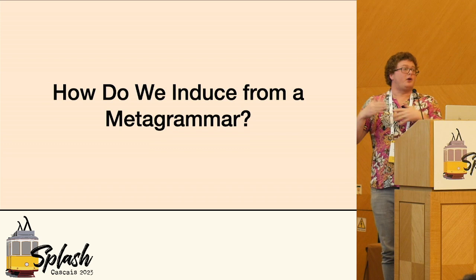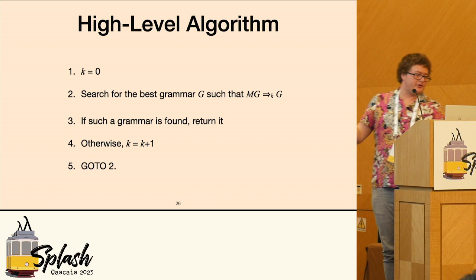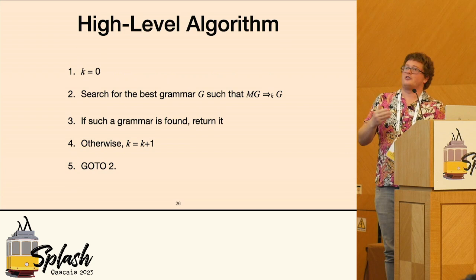Now we want to do the other side — we want to do grammar induction. So how do we induce from a metagrammer? We have complexity zero. We search for the best grammar G such that the metagrammer steps with complexity K to G. If a grammar is found, we return it — we're done.